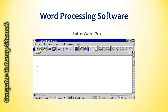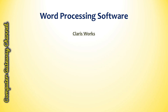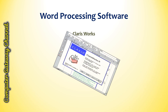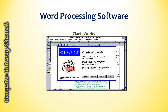This slide shows the interface of Lotus Word Pro. Lotus Word Pro is a word processing application that was part of the Lotus SmartSuite software package. It was developed by IBM and was popular in the 1990s and early 2000s. ClarisWorks is a full-featured word processor package published by Claris for Apple Macintosh and Windows operating systems.